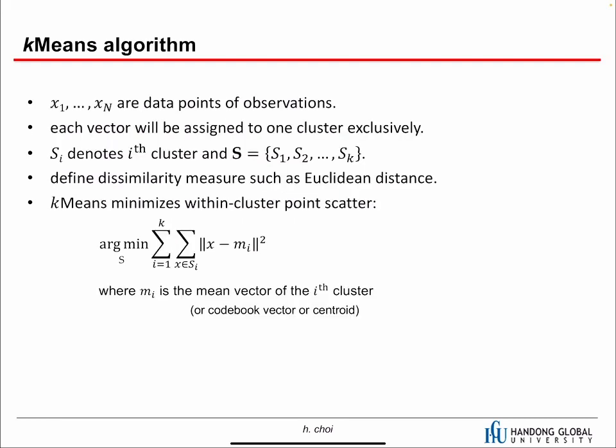This slide summarizes the k-means algorithm. Given n samples, each vector will be assigned to one cluster exclusively. Think about your photos in a smartphone — you cannot put one photo into two different groups, so one photo will be in one cluster exclusively. We denote the i-th cluster as Si, and we have k clusters. We define a dissimilarity measure such as Euclidean distance. If you don't have any idea about your data samples, Euclidean distance is one way to go, but if you have deep understanding of the data, you can define your own dissimilarity measure.